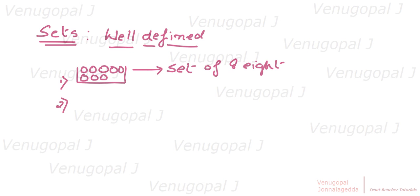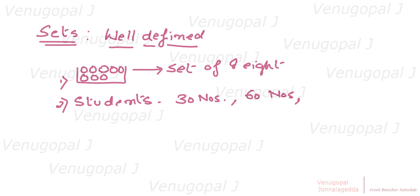The second example is students in a class. They are also well-defined — a class might have about 30 students, sometimes 60, and in engineering colleges maybe more than 100. This is a well-defined count. So a set of students in a class is well-defined — it can be 30, 60, or 100.